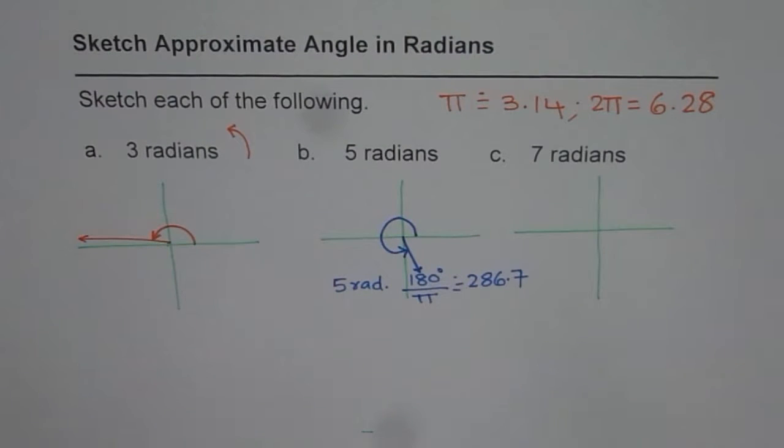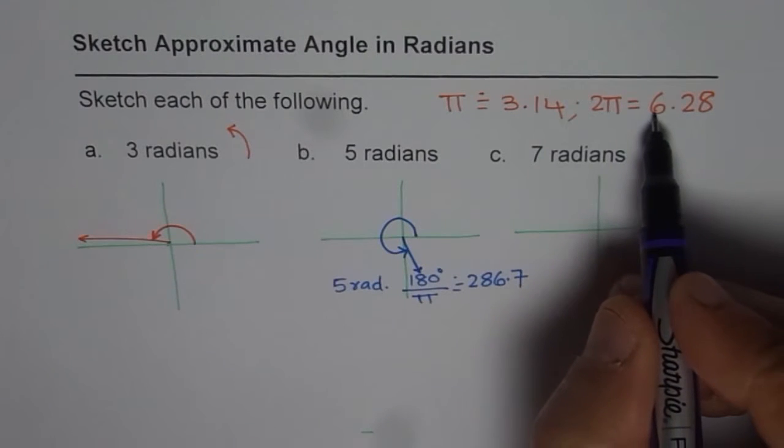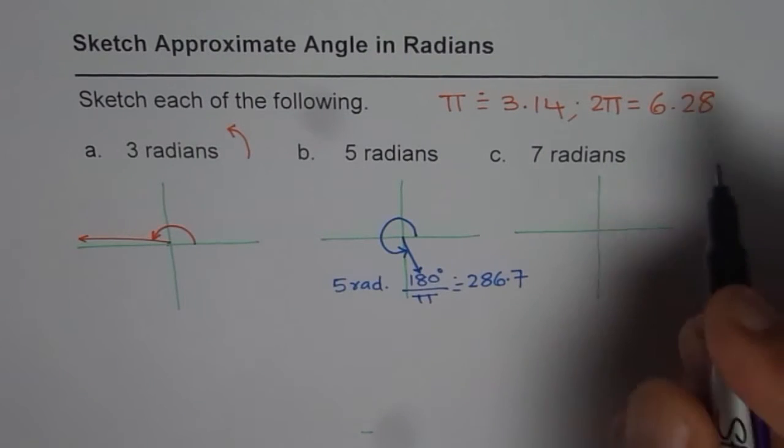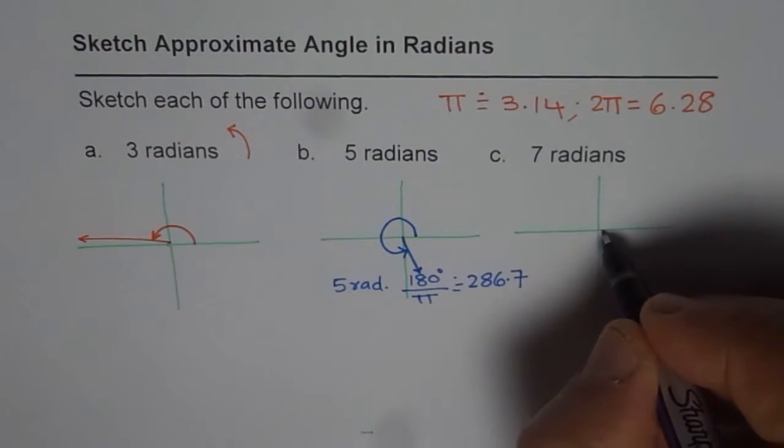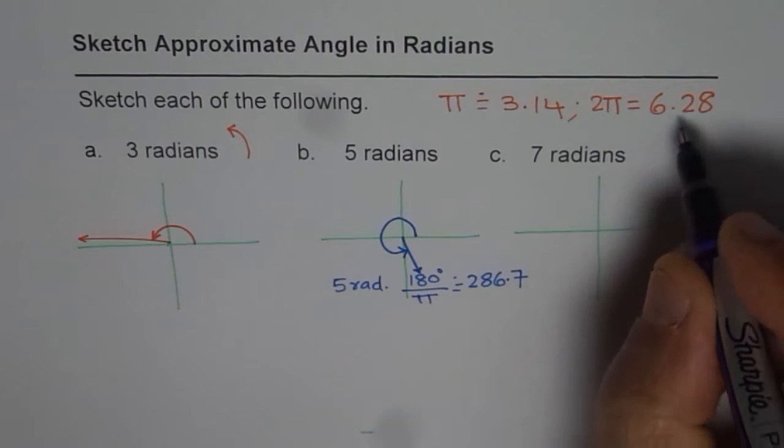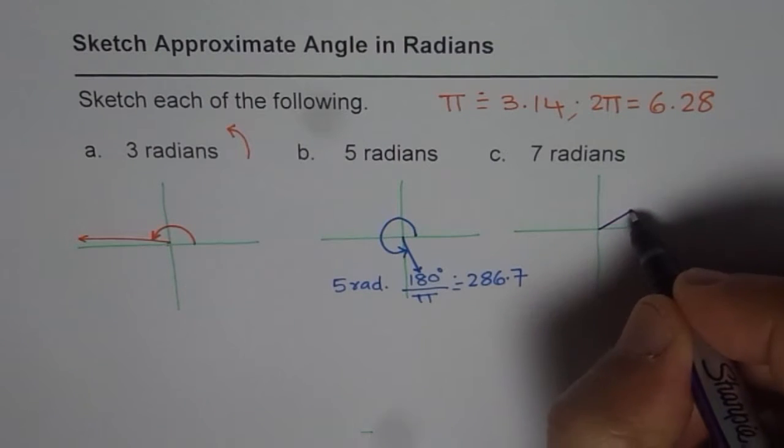Now let us look into 7 radians. 7 radians is more than 6, right. So approximately you can say it will be one full circle and slightly more. So it will be kind of like this.